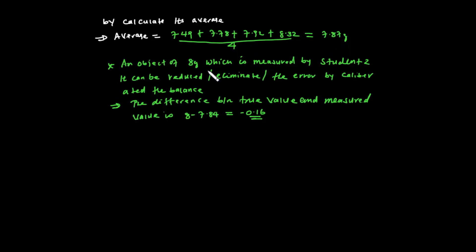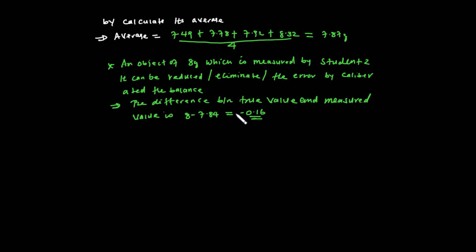An object of 8 grams measured by Student 2 shows systematic uncertainty, which can be reduced or eliminated by calibrating the balance. The difference between the true value and the measured value is minus 0.16, so recalibrating the balance removes the systematic error.